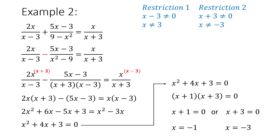Now I need to double-check with my restrictions. I check my first answer, x equals negative 1 — is that in my restrictions? No, it's not. Then I go to my other answer, x equals negative 3. My second restriction says that x can't be equal to negative 3, so I keep it there but write 'not applicable' next to it. The other solution is still applicable, so there is a solution, but only one of the answers is actually applicable. I hope that helps.